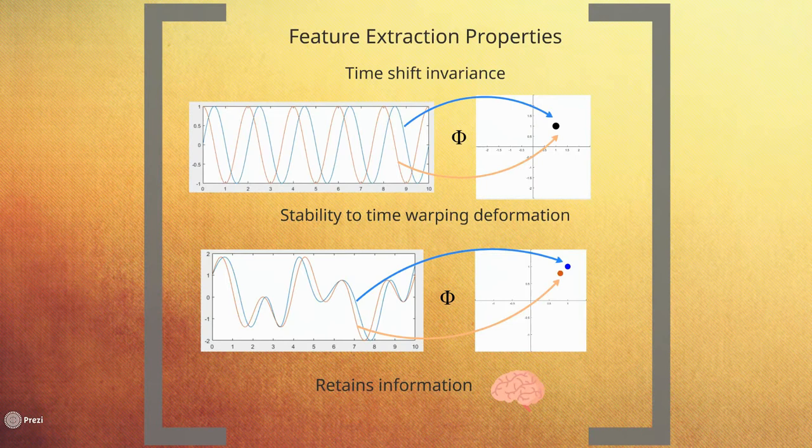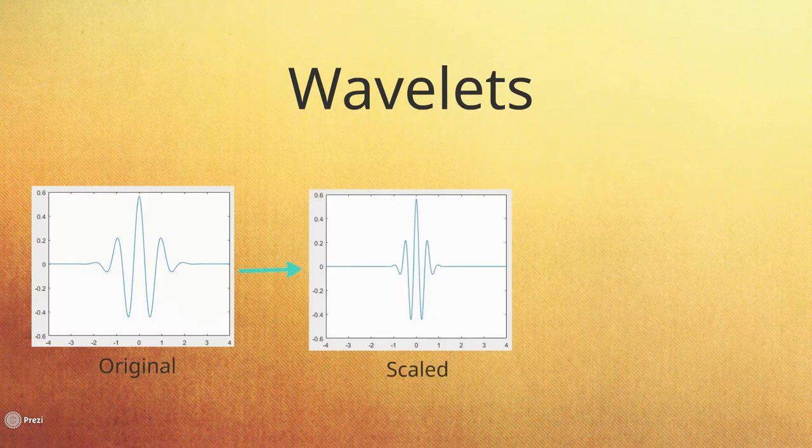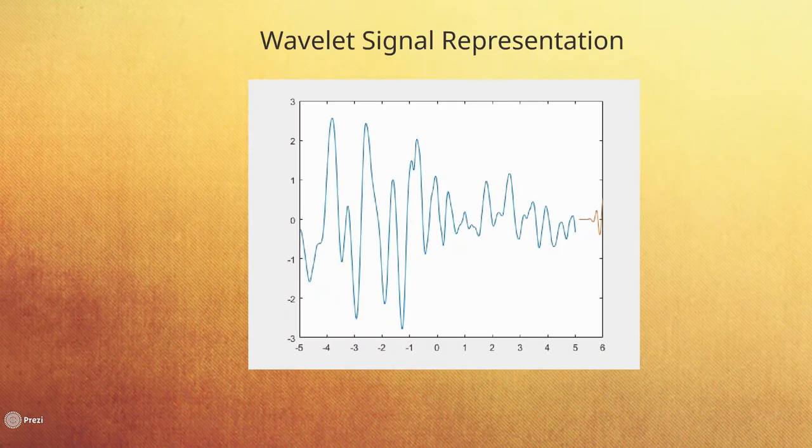The Wavelet Scattering Transform possesses all of these properties. In order to extract features, we use wave-like oscillations called wavelets, which can be scaled and shifted to best fit the signal. By creating a linear combination of wavelets, we can create new signal representation.